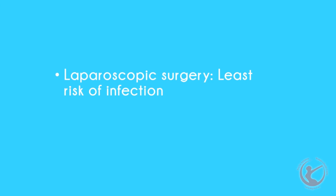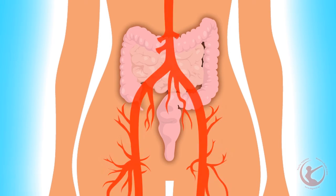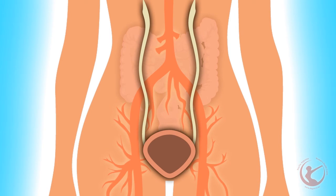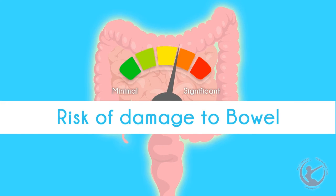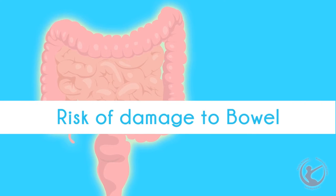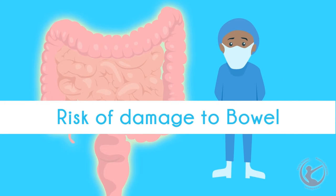Laparoscopic surgery is regarded as the cleanest of all procedures. The risks of this procedure are minimal, but any organ in the abdomen can be damaged during surgery. The organs most at risk of damage are bowel, blood vessels, the ureter and the bladder. If there is significant risk of damage to your bowel, I will arrange for you to have bowel preparation prior to your surgery, and arrange for a bowel surgeon to be on standby to help with your procedure.